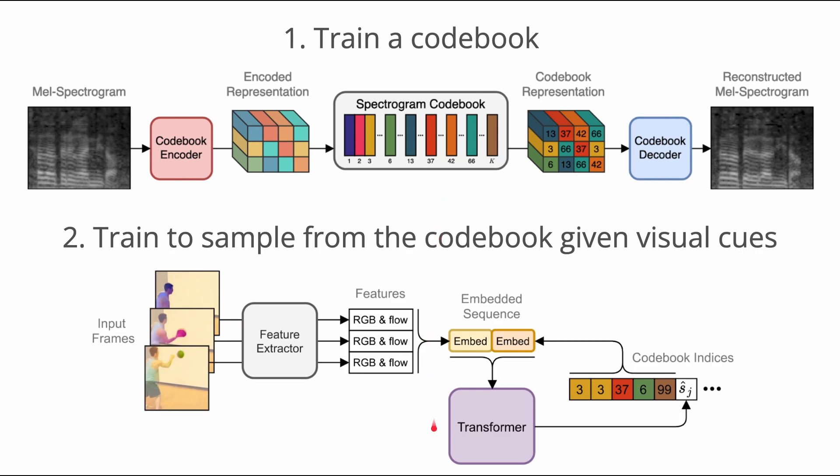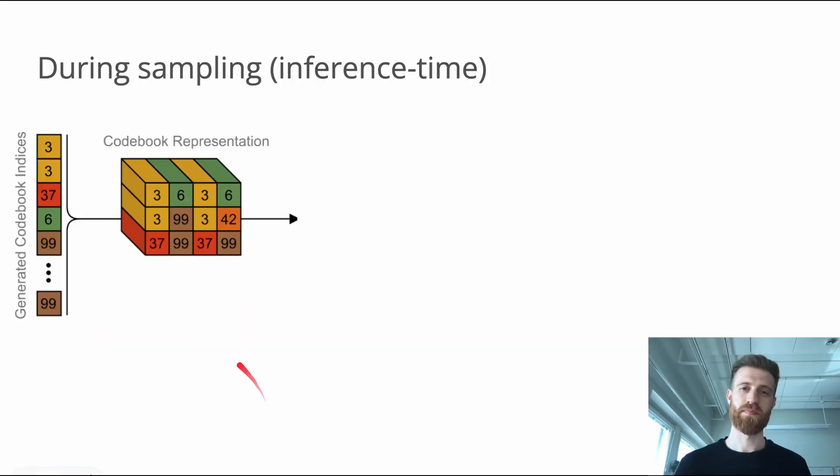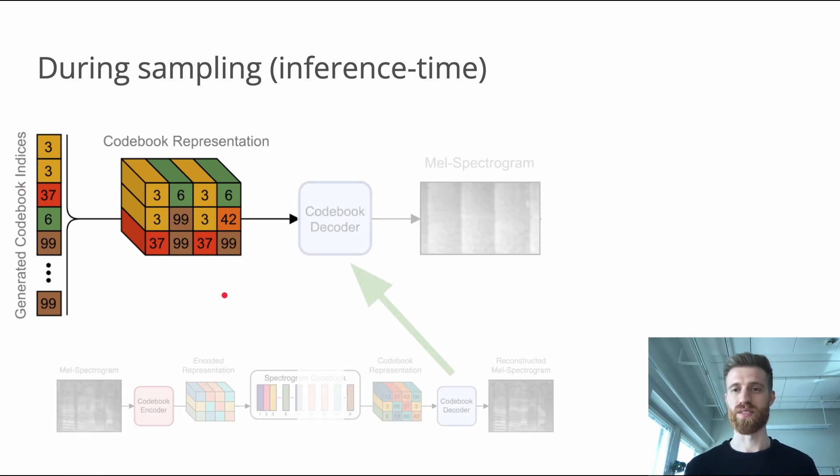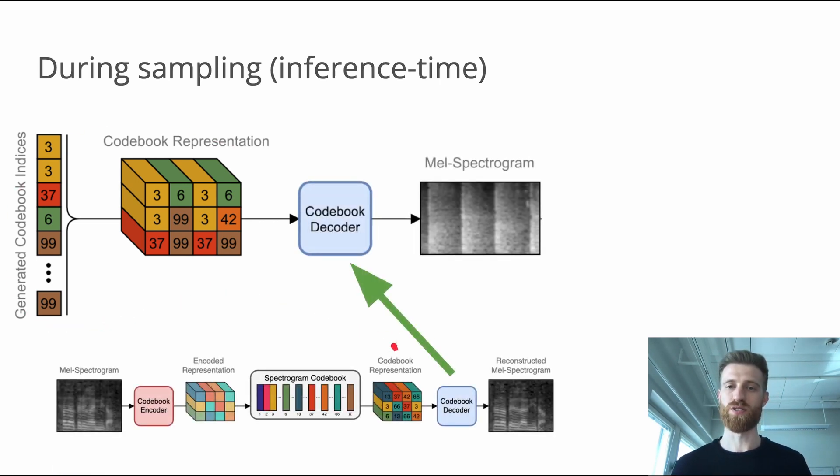Once the autoencoder and the codebook vectors are trained, we train a transformer model to sample relevant codebook codes conditioned on the visual features. During test time, we take the sequence of sampled codes and reuse the decoder from the autoencoder to reconstruct a novel spectrogram.